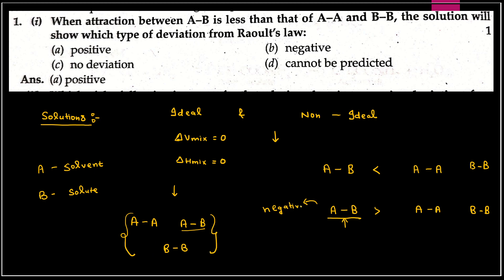Negative deviation show karega. Aur agar force of attraction A-B kam hai A-A aur B-B se, to positive deviation show karega. Clear hai. Aur agar equal hai to ideal solution hoga. Yahan par A-B interaction is lower than A-A and B-B, therefore it will show positive deviation from Raoult's law.